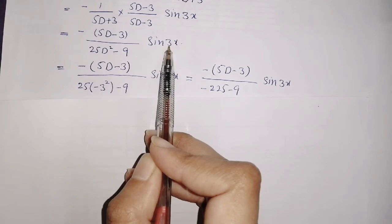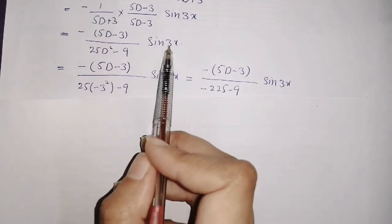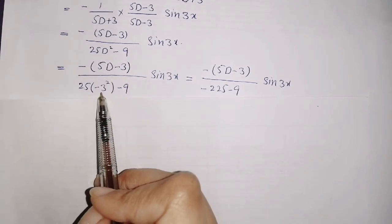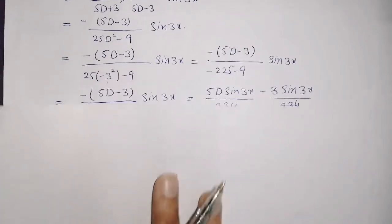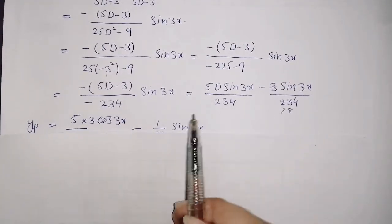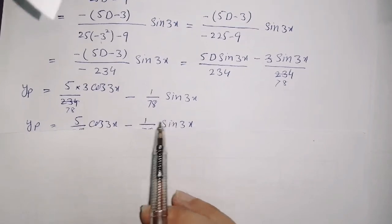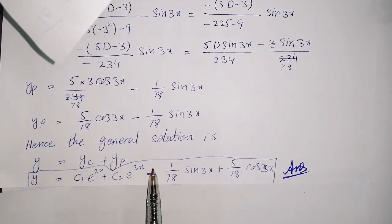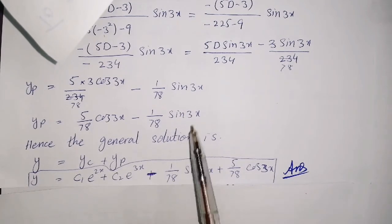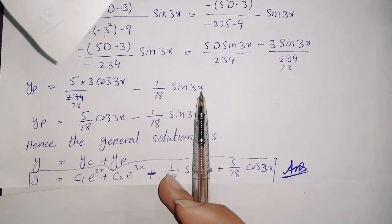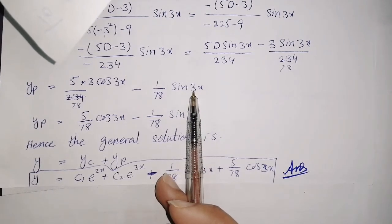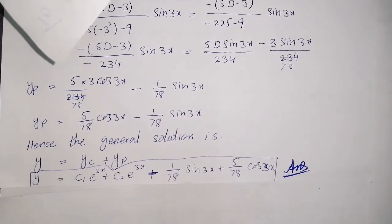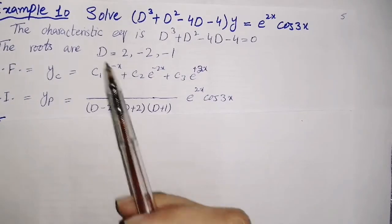Again, substitute D² = −(3²) = −9. After simplifying and canceling terms, we get the particular integral. Then the general solution is y = yc + yp. Summary of the rule: whether it is sin or cos, take the coefficient of x, square it, and put its negative in place of the even powers of D. That's Example 9 done. Next is Example 10.